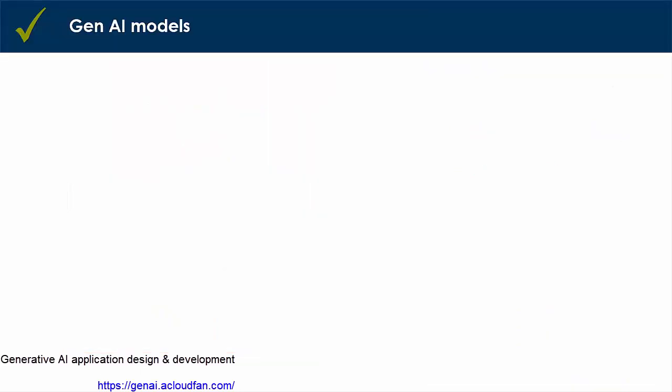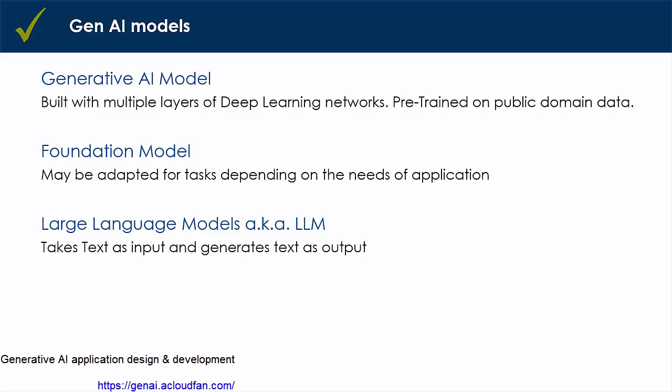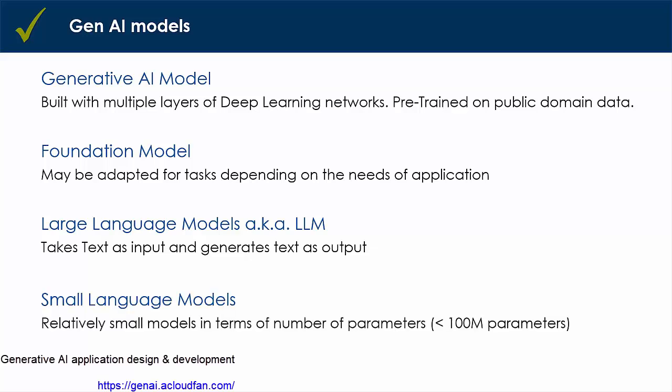In this lesson, I provided you a very high level view of generative AI models. Generative AI models are built with multiple layers of deep learning networks. These models are pre-trained on public domain data. Foundation models are generative AI models that are not trained for a specific task, but these models can readily be adapted for tasks depending on the needs of the application. Large language models, also known as LLM, are foundation models that take text as input and generate text as output. Small language models have relatively smaller number of parameters compared to their LLM counterpart. Typically, a model is considered small if it has less than 100 million parameters. Happy learning and I will see you in the next lesson.